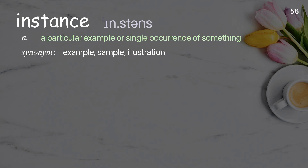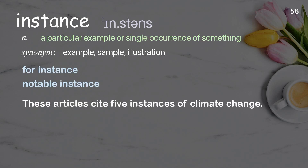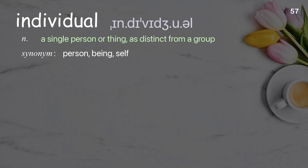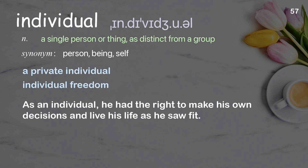Instance: A particular example or single occurrence of something. Individual: As distinct from a group. Examples: A private individual. Individual freedom. As an individual, he had the right to make his own decisions and live his life as he saw fit.